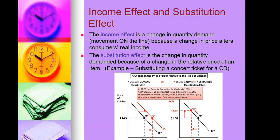The income effect is a change in quantity demanded — a movement on the demand curve — because a change in price alters consumers' real income. The substitution effect is the change in quantity demanded because of a change in the relative price of an item. For example, because the price of beef went up, people decided to purchase chicken instead. At one dollar, the quantity demanded for chicken is 125 pounds — an increase of 25 pounds from the previous 100.